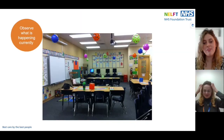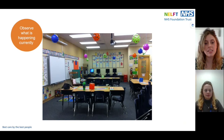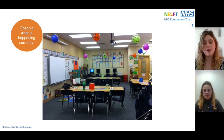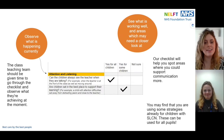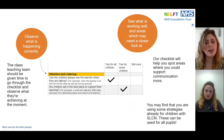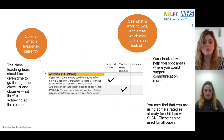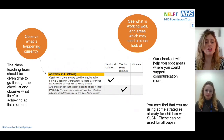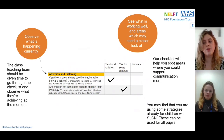You then need to observe what is currently happening. Choose a time to go into the classroom — this may just be a 20-minute observation during a lesson. Remember, this is a snapshot observation which can be discussed with the team later. The class teaching team should be given time to go through the checklist and observe what they're achieving currently. Use the checklist to identify areas that are already working well and areas where you could support children's communication more. You may find that strategies you're already using for children with SLCN can be used for all of your children.